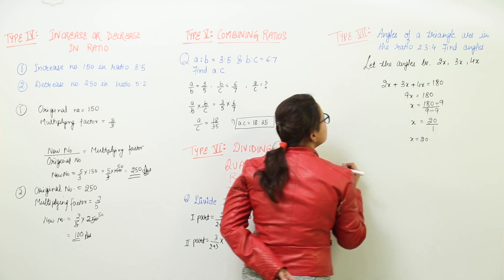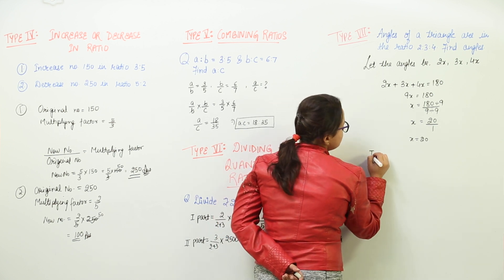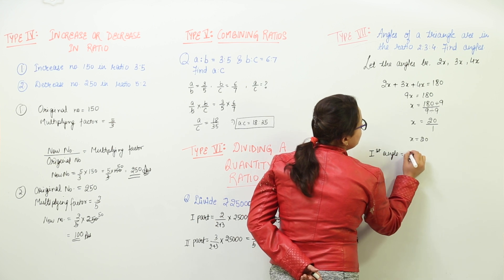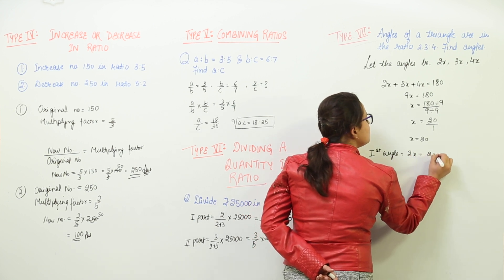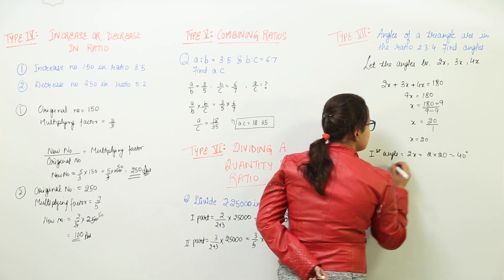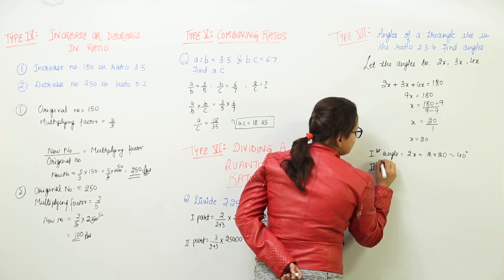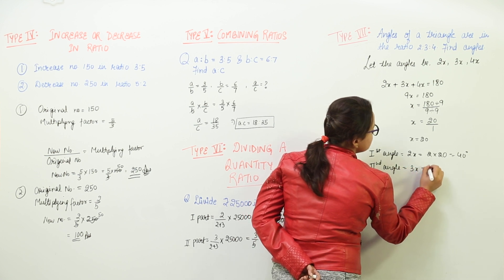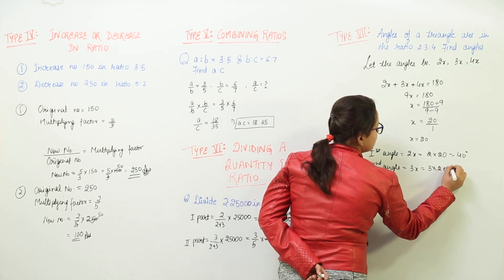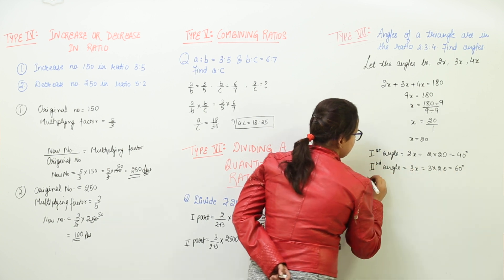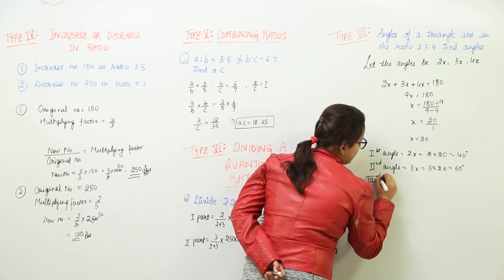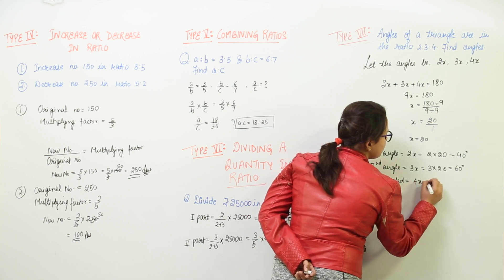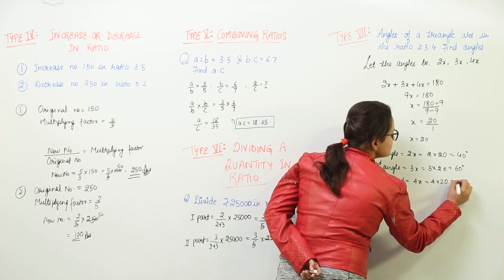Now we can write the value of angles. The first angle would be equal to 2x, that is 2 into 20 which makes 40 degrees. The second angle was assumed to be 3x which makes it 3 into 20 getting 60. And the third angle as we have assumed it to be 4x would be 4 into 20 giving us 80.